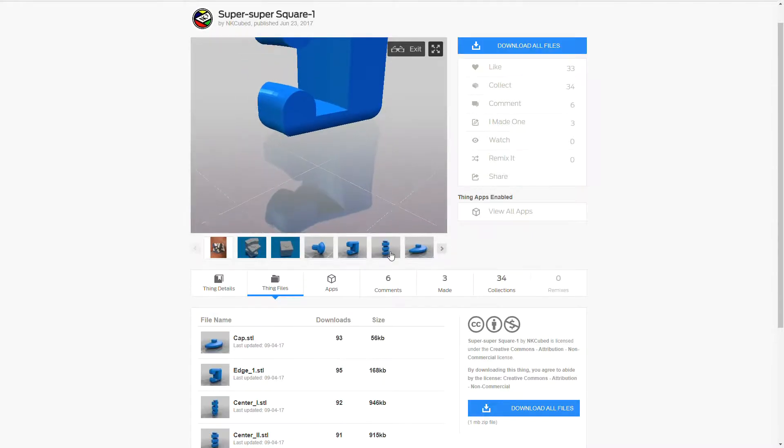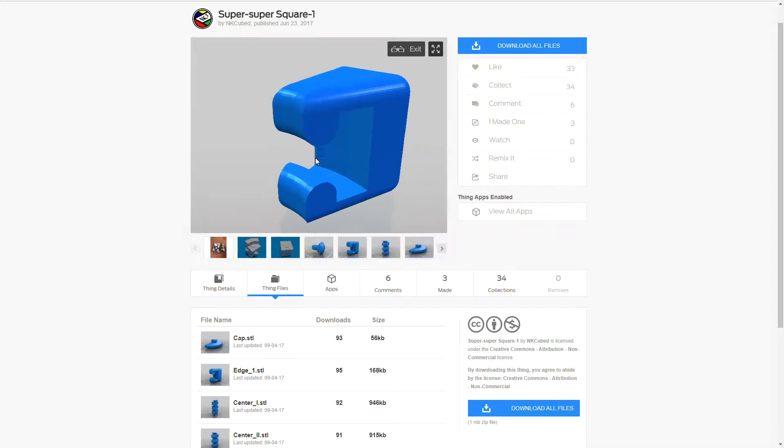You need to print 12 of these edges. Make sure to print it with one of these faces down with the two nubs.